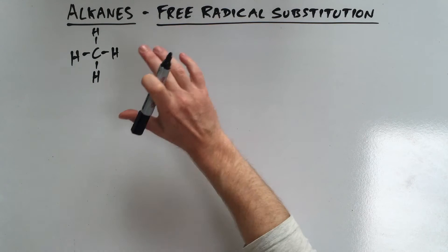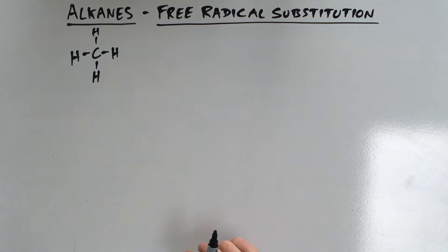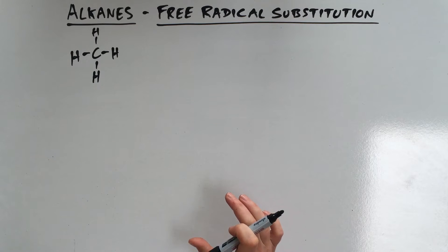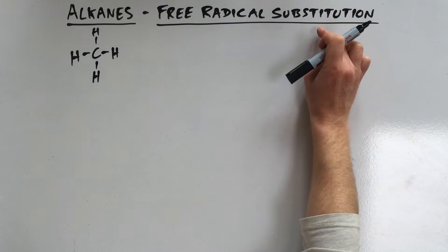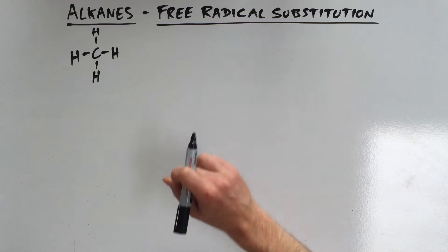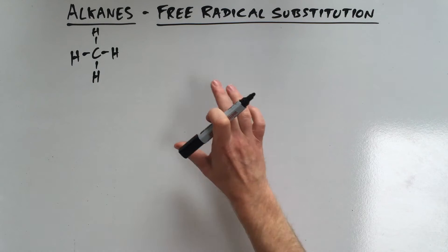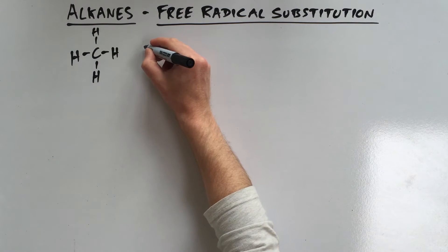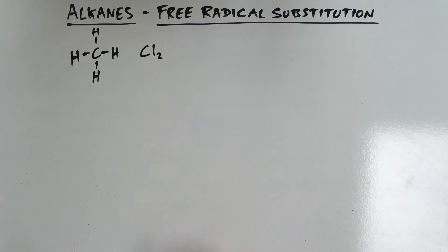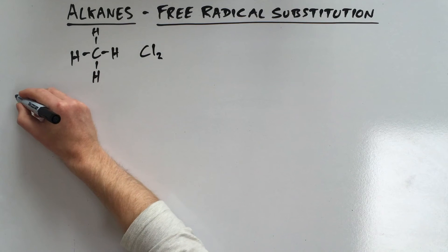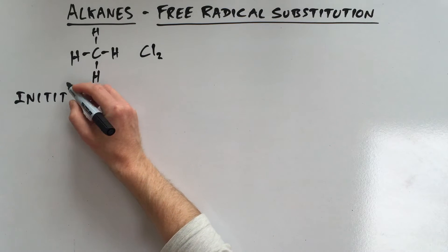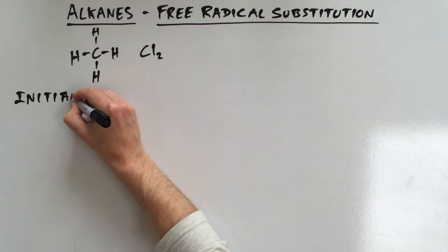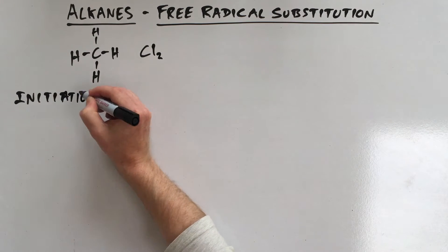That reactive species is a free radical. A free radical has a single unpaired electron, making it very reactive. We're going to use it to substitute one of the hydrogens on the alkane. This comes in three stages — we're looking at the reaction between chlorine and alkanes. The first stage is to form our free radical, and this is known as initiation.